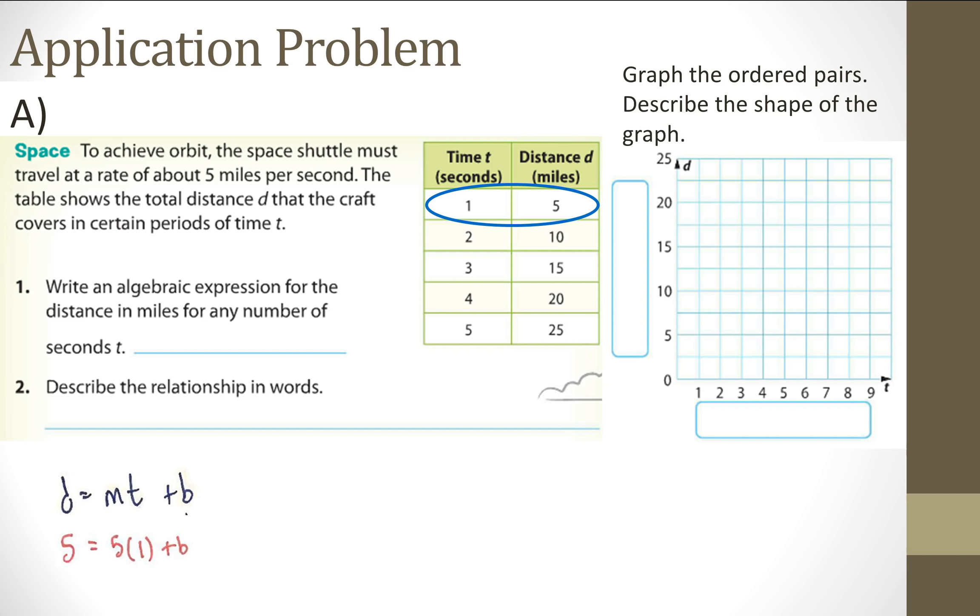I can substitute in one and five, and then I can find out that my B is equal to zero, which gives me the equation. I know that M is equal to five, the change in Y over the change in X. So my formula is the distance is equal to five times the seconds. Let's describe this in words. For every second, the distance increases by five miles every second.